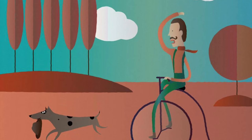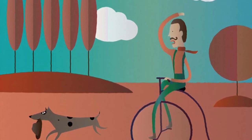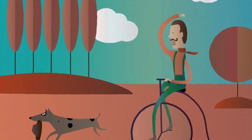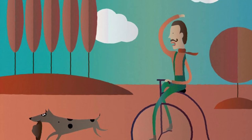'Twas Mulga Bill, from Eagle Hawk, that sought his own abode, that perched above Dead Man's Creek, beside the mountain road. He turned the cycle down the hill, and mounted for the fray, but ere he'd gone a dozen yards, it bolted clean away.